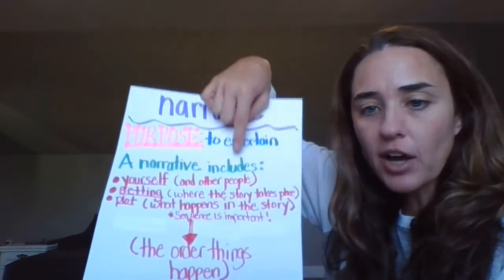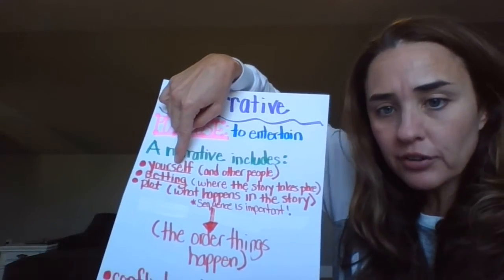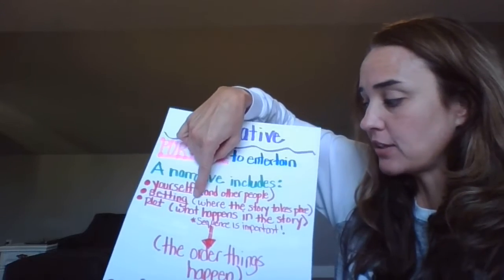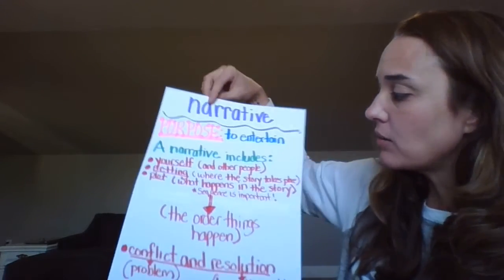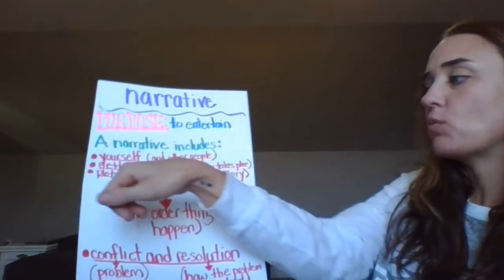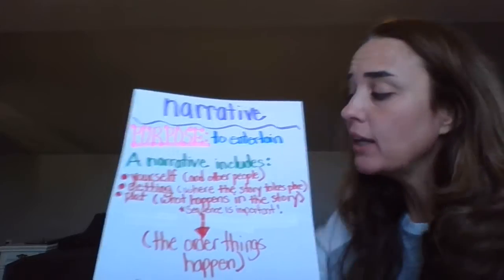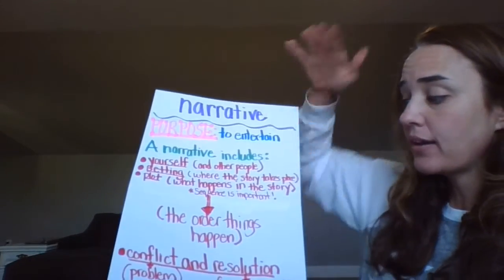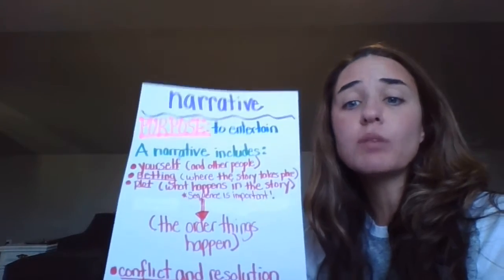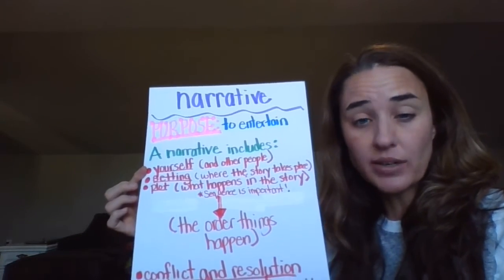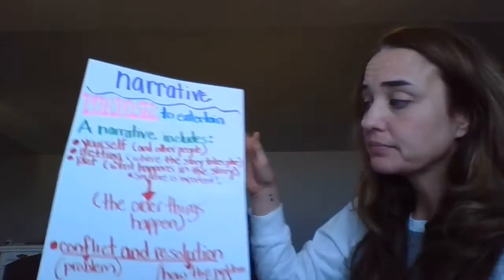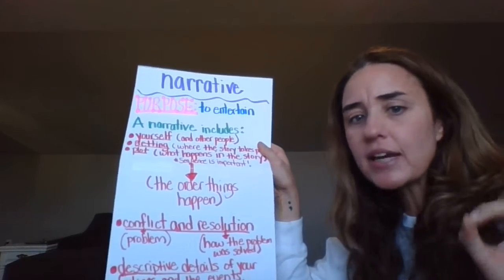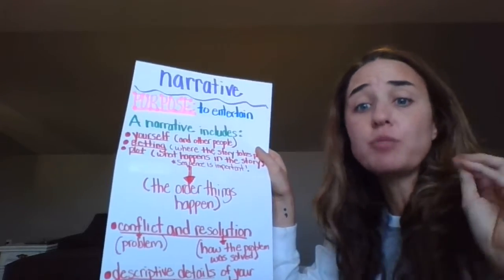A narrative includes the following things: it includes yourself and other people — those are your characters. It includes the setting, which is where the story takes place, and the plot, which is what happens in the story. Remember, when you're talking about what's happening in the story, sequence is very important, because without sequence — which is the order the story happens — your story is not going to make sense. Your story can also have conflict and resolution, though it doesn't always have to.